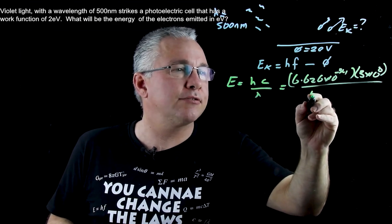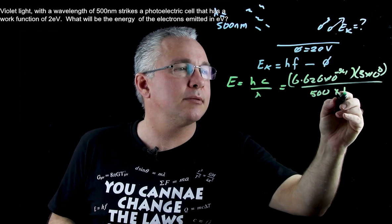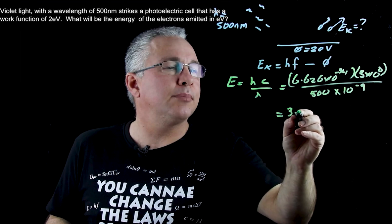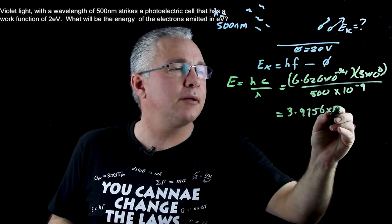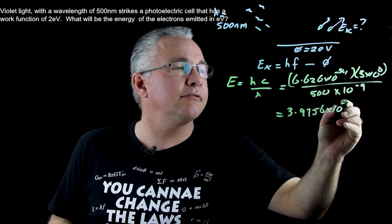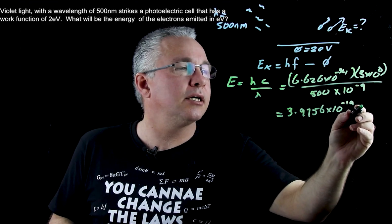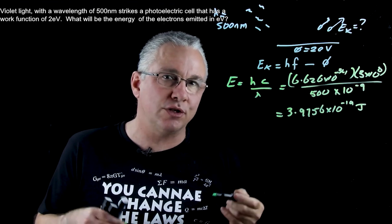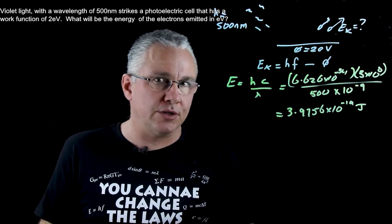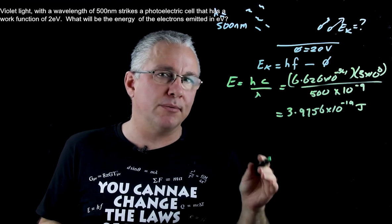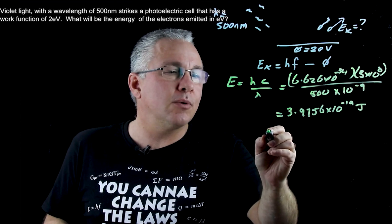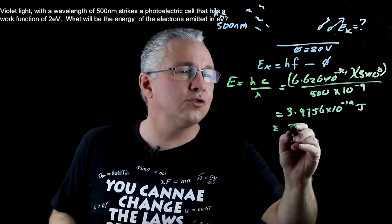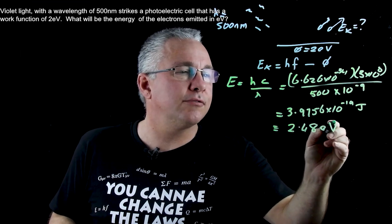Lambda is our wavelength — that's 500 nanometers, so 500 × 10⁻⁹. When you calculate that out you get 3.9756 × 10⁻¹⁹ joules. That is the energy in the SI unit joules. We now need to convert that to electron volts by dividing by 1.6 × 10⁻¹⁹, giving us 2.48 electron volts.